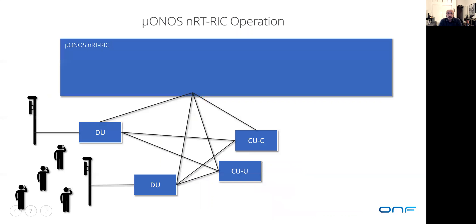Now let us go over the micro-ONOS near real-time RIC operation. Imagine this RAN network state. We have a number of end user devices, some of which are mobile. They're being serviced by geographically distributed RUs that are pooled by DUs, which are further pooled by user plane and control plane separated CUs. Each of these devices will have certain attributes that may be useful while conducting computations to make RAN control and configuration decisions.